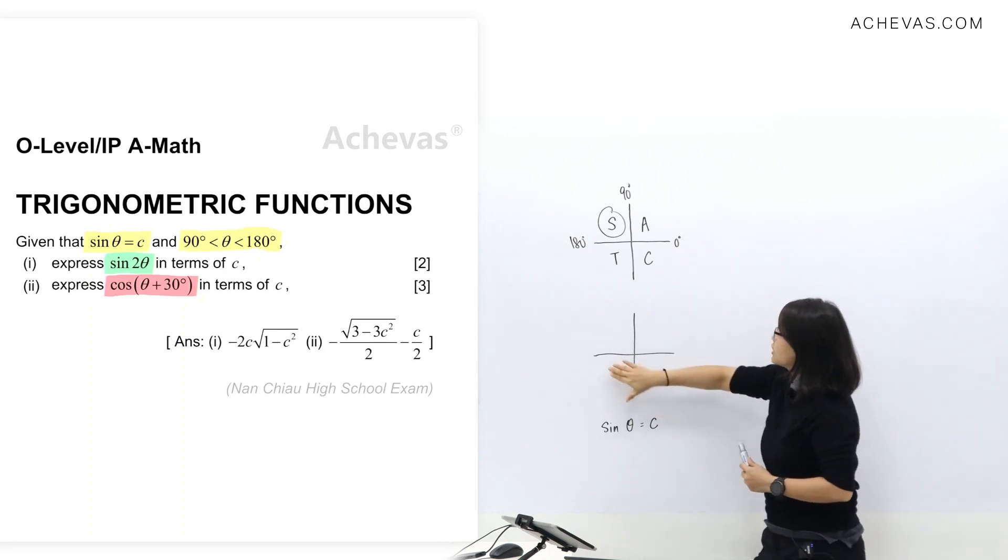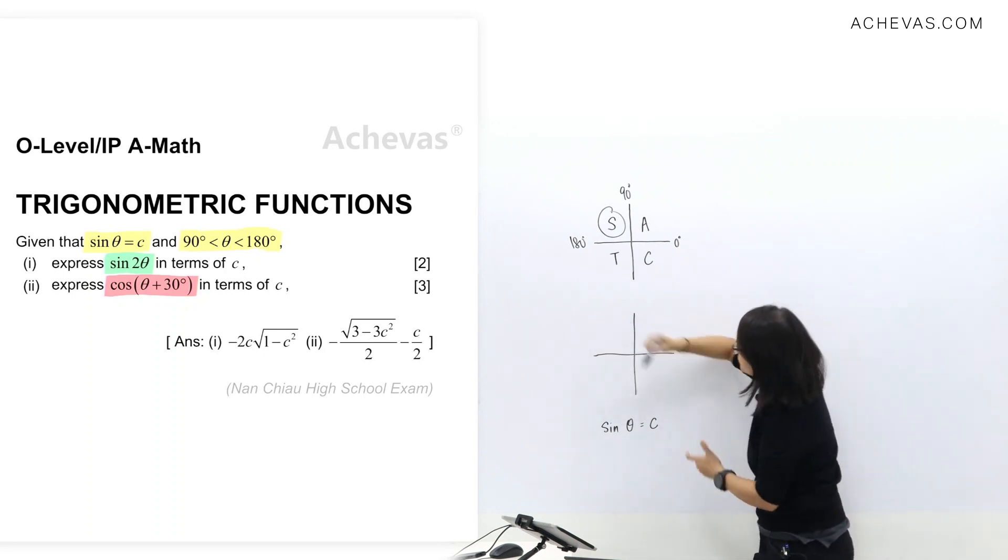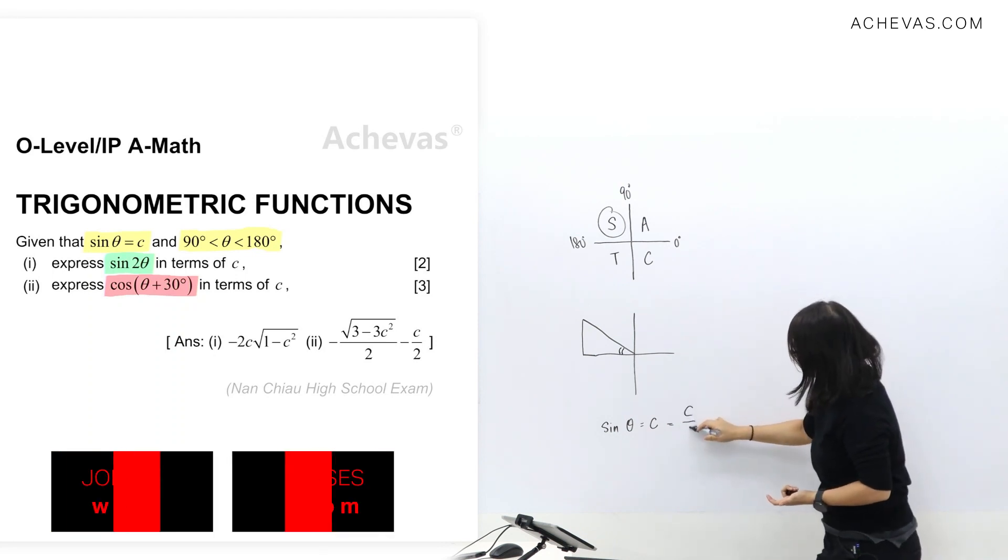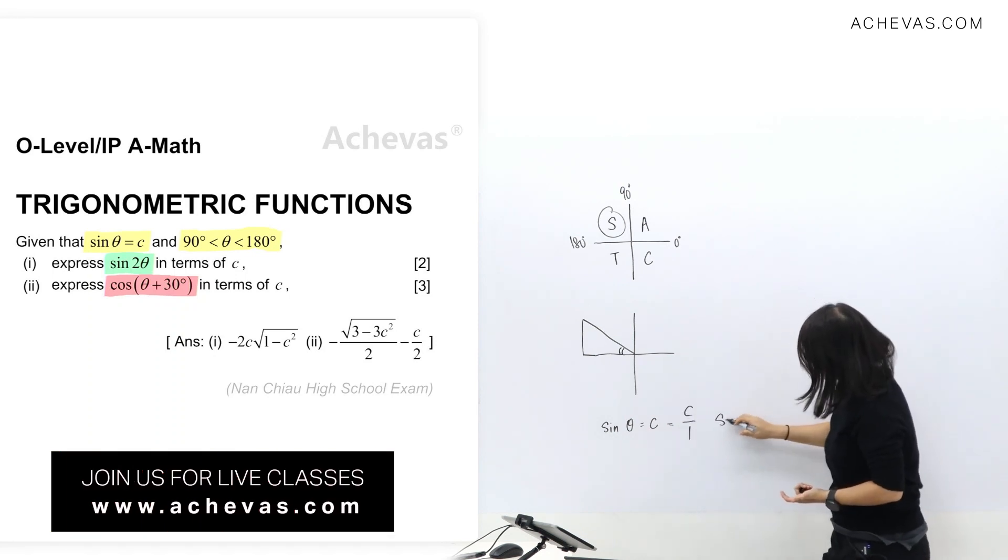So I'll follow by drawing a triangle in quadrant 2. This is my reference angle here. So I'm going to change this c to a fraction. I'm going to write this c over 1, so that I can apply it as OH and put c at opposite side and 1 as hypotenuse.